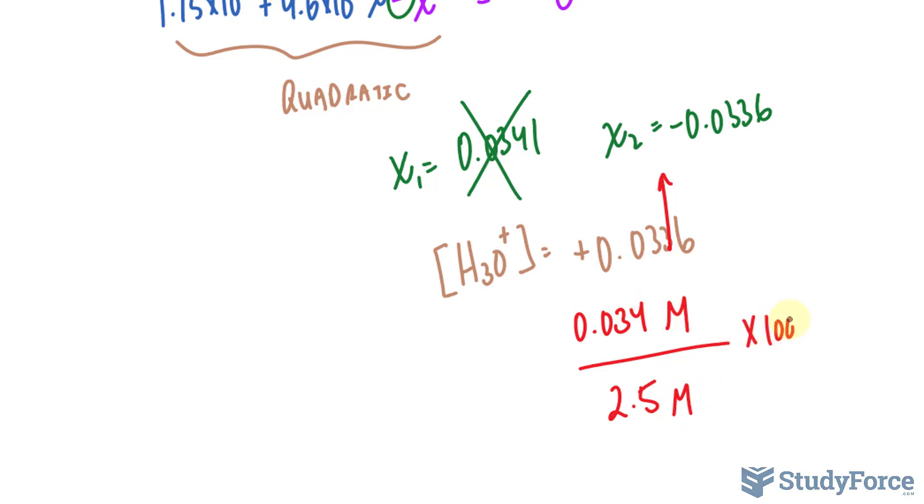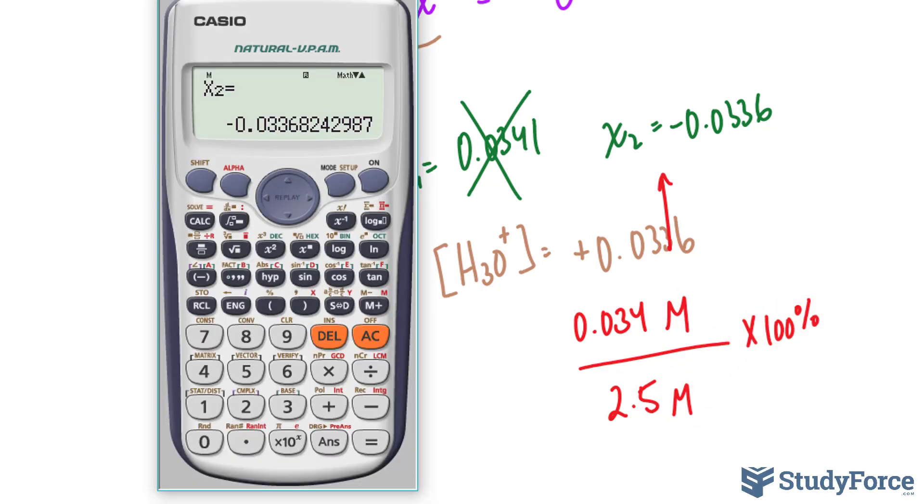So we divide these out, multiply them by 100%. Let's see what happens. 0.034 divided by 2.5. And if you want, rather than using the rounded version of this answer, to be more accurate, we can actually use the unrounded version and then round at the end to two significant figures. So I'll do that instead.